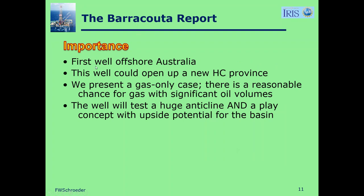The importance — the second question. This happens to be the first well drilled offshore Australia, drilled in 1965. This well, if successful, would open up a new hydrocarbon province offshore Australia, and it turns out that it did. We are going to present a gas-only case so that the numbers are conservative; there is some chance we might have some oil, which would only improve the economics. The well will test a huge anticline and also a play concept with upside potential for the basin — meaning we can use the same play concept in other parts of the basin and maybe find not just one field, but a string of fields.